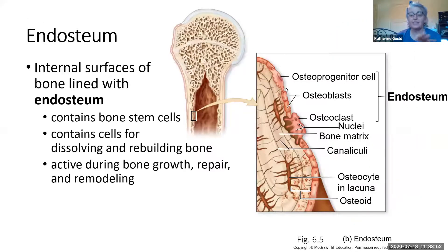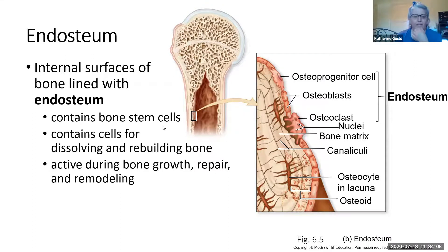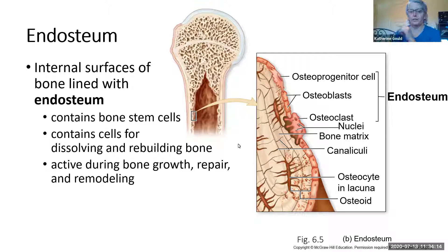That's the periosteum around the outside of the bone. The inner surfaces of bone — all of these pockets in the spongy bone, and the main cavity inside the long bones — that's called endosteum. Endo meaning inner. And this is going to have the stem cells that create new bone tissue and new osteocytes.